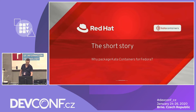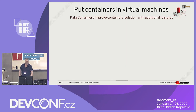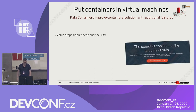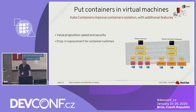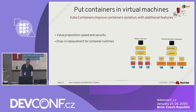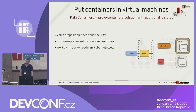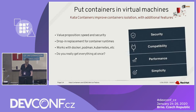So let's start with a short story. Why package Kata Containers on Fedora? You want to put containers in virtual machines to provide isolation and additional features. I'm taking the value proposition straight from the Kata Containers website: the speed of containers, the security of VMs. It's a drop-in replacement for container runtimes — where you used to have runc, you just have Kata runtime instead. It should work with Docker, Podman, Kubernetes, OpenShift, and so on.